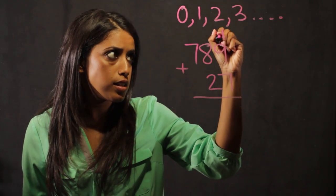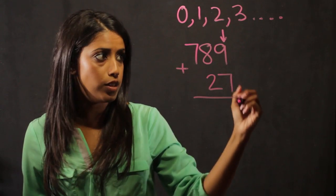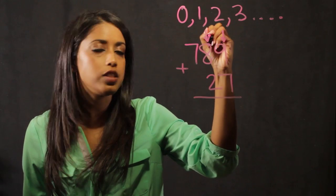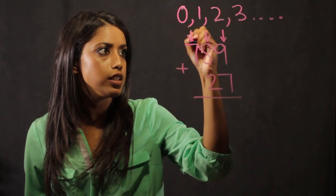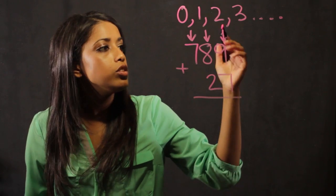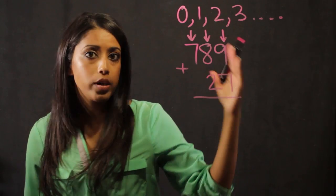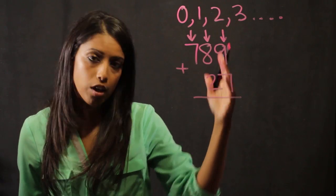So in this section is our ones unit, this is our tens unit, and this is our hundreds unit. So we begin always on the right side and we start with our ones unit.